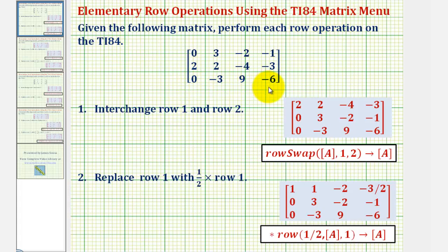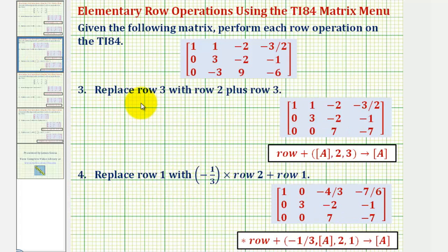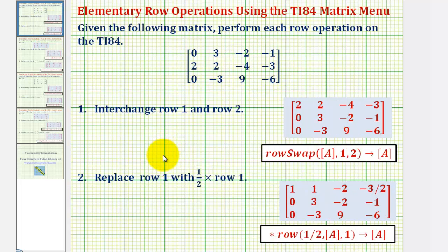We're given this three by four matrix and we want to perform the following row operations. Number one, interchange row one and row two. Number two, replace row one with one-half times row one. Three, replace row three with row two plus row three. And finally, replace row one with negative one-third times row two plus row one. I've already shown the results of these row operations here in red. For practice, we'll duplicate these on the TI-84.